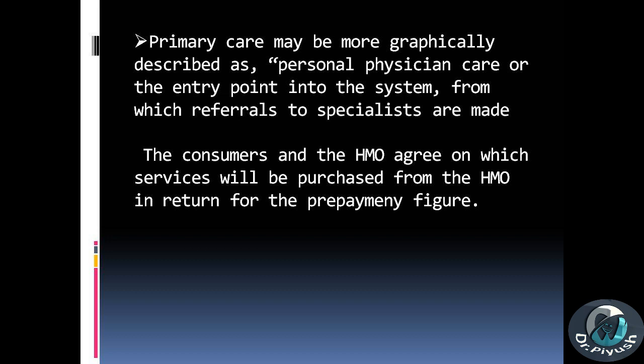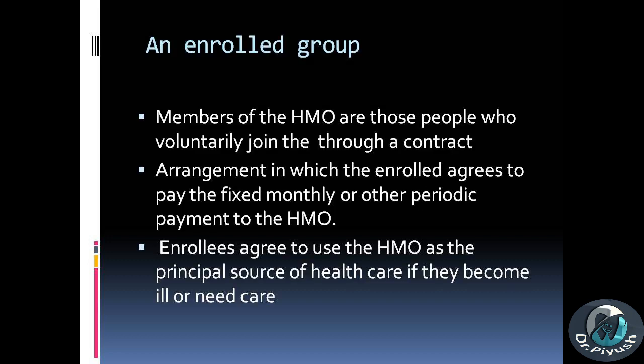Primary care is one of the keystones of the HMO. It emphasizes services aimed at preventing the onset of illness or disability, at the maintenance of good health, and at the continuing evaluation and management of early complaints, symptoms, problems, and the chronic aspects of disease. Primary care may be described as personal physician care or the entry point into the system from which referrals to specialists are made. The consumers and the HMO agree on which services will be purchased from the HMO in return for the prepaid amount. Enrolled group: members of the HMO are those who voluntarily join through a contract arrangement, agreeing to pay a fixed monthly or other periodic payment to the HMO, and to use the HMO as the principal source of health care if they become ill or need care.